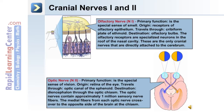The second cranial nerve is the optic nerve. Its primary function is the special sense of vision. The origin is the retina of the eye, and it travels through the optic canal of the sphenoid bone. The destination is the diencephalon through the optic chiasm. The optic nerve contains approximately one million sensory nerve fibers. The medial fibers from each optic nerve cross over to the opposite side of the brain at the chiasm.